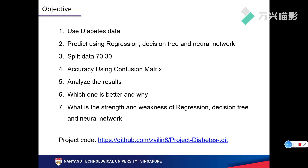First, I use diabetes data and split the data as 70% and 30%. Then, I predict using these three models. Next, I calculate the accuracy using confusion metrics. At last, I will state the strength and weakness of three models. At the bottom of this PowerPoint is my GitHub code link.